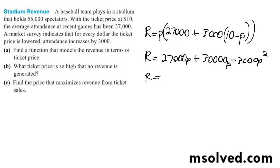So P squared. Okay, we're going to have 57,000P minus 3,000P squared.